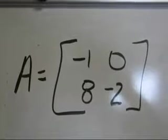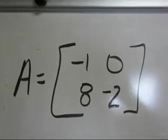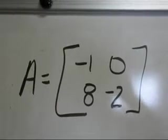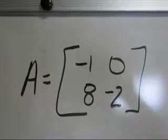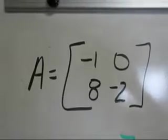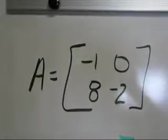Let's practice finding the inverse for a 2x2 matrix. We can only do the 2x2 matrix by hand. Everything else requires technology. So here we have our matrix A with the elements negative 1, 0, 8, and negative 2.